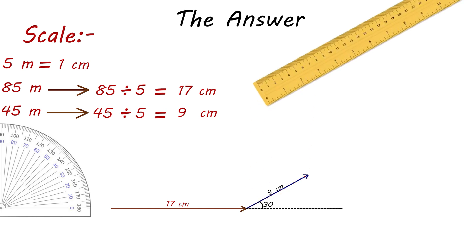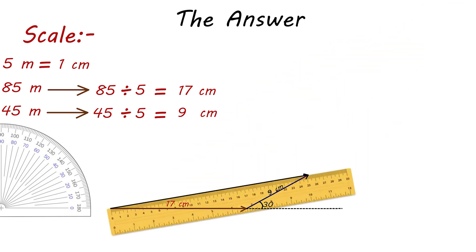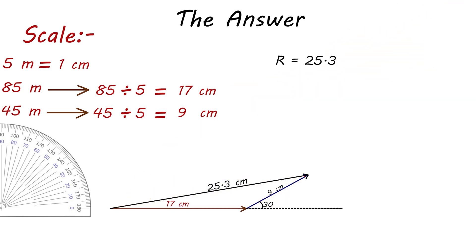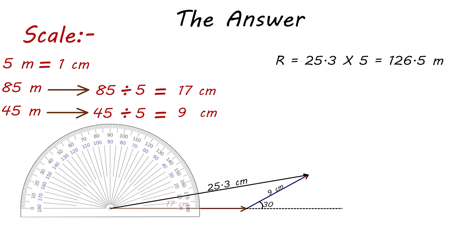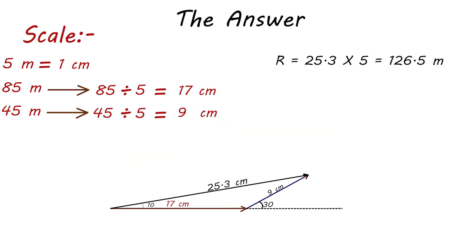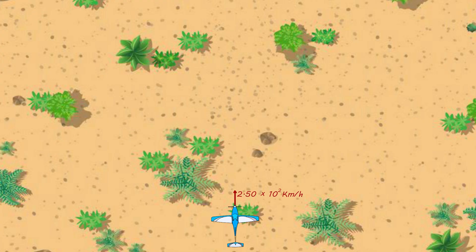We then draw the resultant vector representing the roller coaster's displacement, from the tail of the first vector to the head of the second vector. We measure the resultant vector with the ruler to find its length, then multiply by 5 to find the actual displacement in meters. To indicate the final displacement direction, we use a protractor to find the angle of the resultant vector relative to the x-axis.